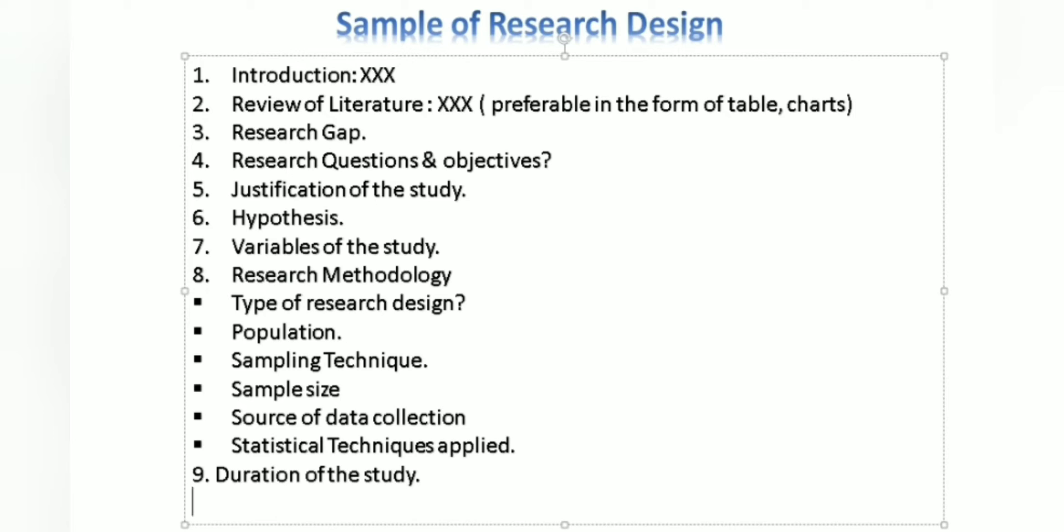Then comes the literature review. I have explained how to write the literature review in my second or third video. In this section, you have to put the objective, the methodology, the techniques used, and the results in one line. So you have to frame one article into four lines. After putting into theoretical form, then it will be preferable that you put it into table form. From the table, you can also make charts and graphs. This will be more presentable. Then comes the research gap, research questions, the objectives, justification, later hypothesis, then variables of the study.